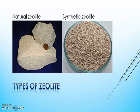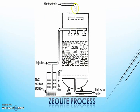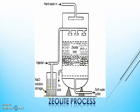Let's see how the actual process works. Here you can see the diagram for a zeolite softener. This is the inlet for hard water, the zeolite bed resting on gravels, the outlet for soft water, and a brine solution inlet for regeneration of the zeolite bed.